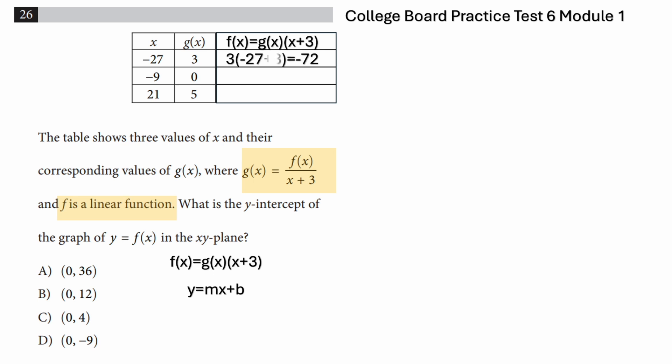So the first x value is -27. You plug in, g(x) is 3 and x is -27, you get f(x) equal to -72.